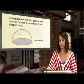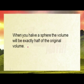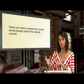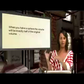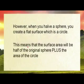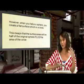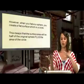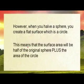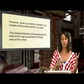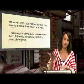If you cut a sphere in half you have a hemisphere — a flat surface at the bottom and the ball shape on top. The flat surface is circular. When you have half a sphere, the volume will be exactly half of the original volume. However, when you cut a sphere in half you also create a flat circular surface, so the surface area of a hemisphere is half the original sphere's surface area plus the area of a circle.